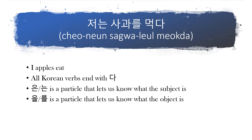A quick note about 은 and 는: we add 는 to words that end with a vowel, and we add 은 to words that end with a consonant. 저 ends with a vowel, so that's why we add 는. The same rule applies to 을 and 를 — words ending with a vowel get 를, and words ending with a consonant get 을. That's just for ease of pronunciation. So now you know the basic Korean sentence structure: subject, object, verb. We use 는 to mark subjects, 를 to mark objects, and all Korean verbs end with 다.